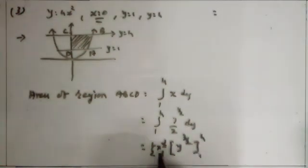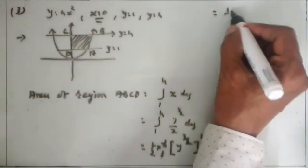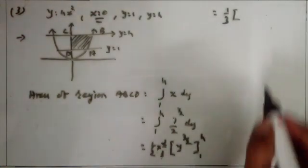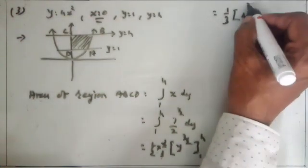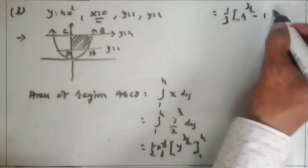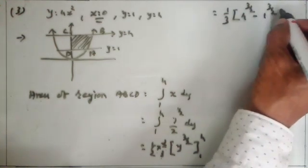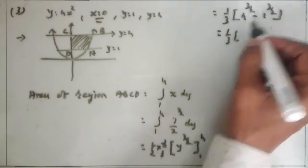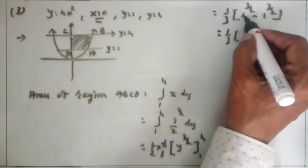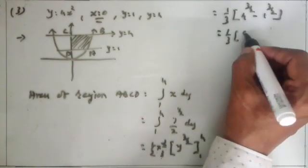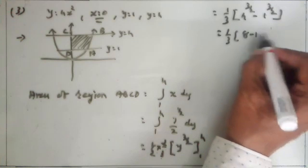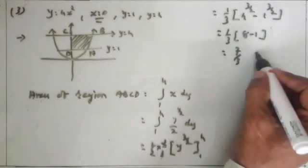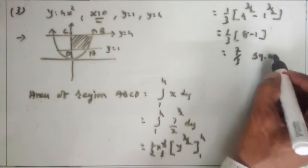So it is equal to — here 2 and 2 cancel, we get 1 by 3 — and F(b) minus F(a): that is 4 raised to 3 by 2 minus 1 raised to 3 by 2. So it is equal to 1 by 3. Here square root of 4 is 2, and 2 raised to 3 is equal to 8, minus 1. So it is equal to 7 upon 3 square units.